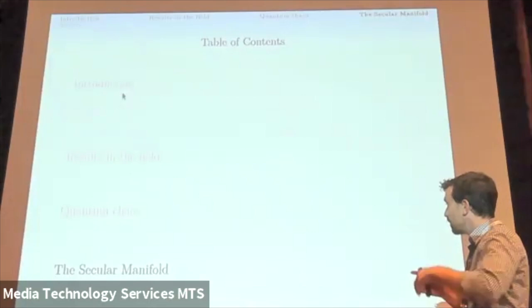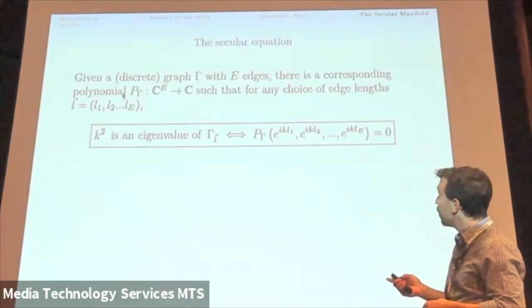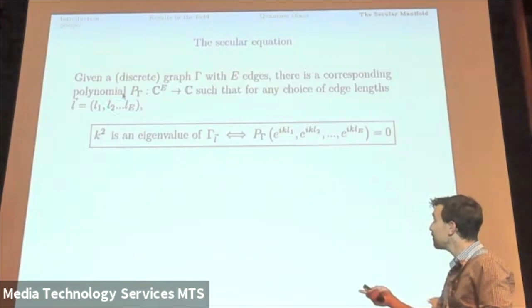Now, the last thing I want to talk about is the secular manifold. So that's like the machinery behind all this. So we've talked about the secular function. So given a discrete graph gamma with E edges, there is some kind of a polynomial from C^E to C, such as for any choice of edge lengths, these are the L_1 up to L_E.